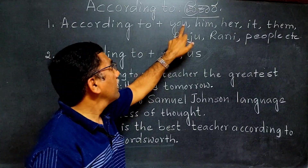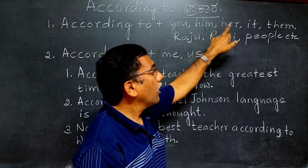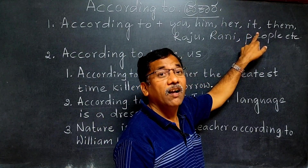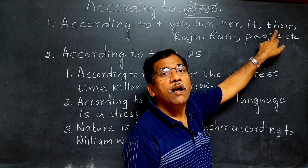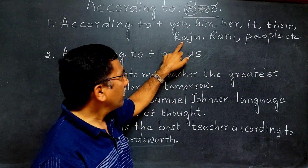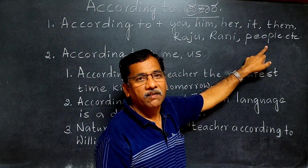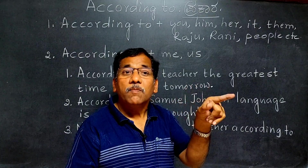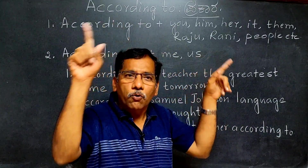Before 'you' means 'according to you' — tamma prakara. Before 'him' means 'according to him' — avana prakara. According to her — avala prakara. According to it — adara prakara. According to them — avara prakara or avugala prakara. According to Raju — Rajuna prakara. According to Rani — Raniya prakara.